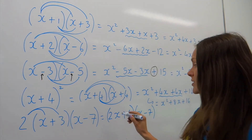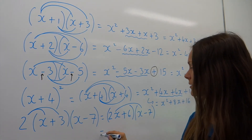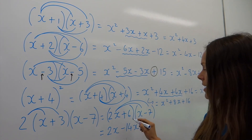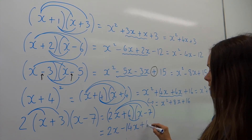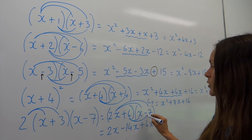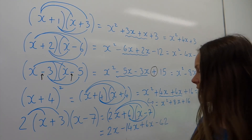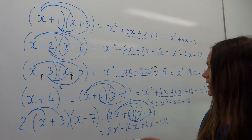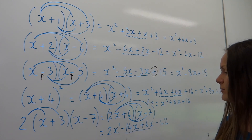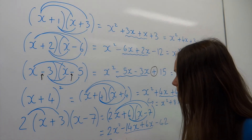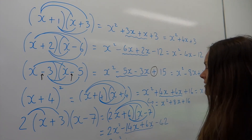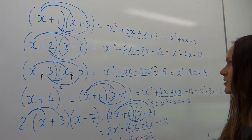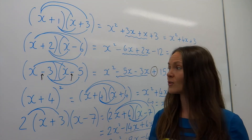Expanding (2x + 6)(x − 7): 2x times x is 2x squared, 2x multiplied by negative 7 is negative 14x, then 6 times x is positive 6x, and 6 multiplied by negative 7 is negative 42. Don't forget to simplify at the end. The 2x squared stays the same as it's the only squared term. Then minus 14x plus 6x gives minus 8x, and minus 42 stays as the constant. So the final answer is 2x squared minus 8x minus 42.